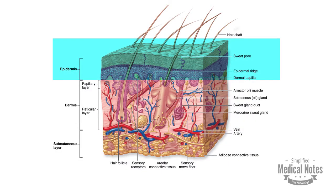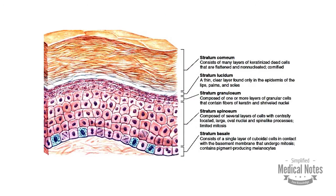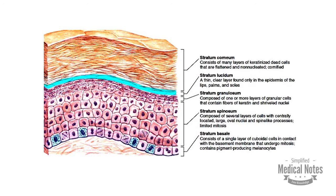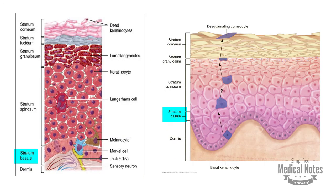The epidermis is the outermost layer of skin. It has five distinct layers: stratum basale, stratum spinosum, stratum granulosum, stratum lucidum, and stratum corneum. The stratum basale contains stem cells that divide and produce keratinocytes in the epidermis. This layer also contains melanocytes.